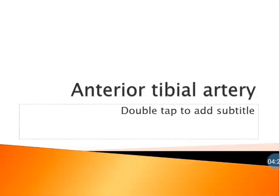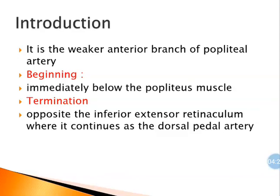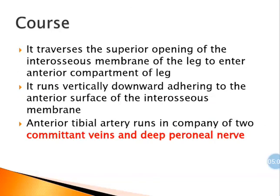The anterior tibial artery is the smaller anterior branch of the popliteal artery. It begins immediately below the popliteus muscle. It terminates opposite the inferior extensor retinaculum, where it continues as the dorsalis pedis artery. It traverses the superior opening of the interosseous membrane of the leg to enter the anterior compartment, coming from posterior to anterior.